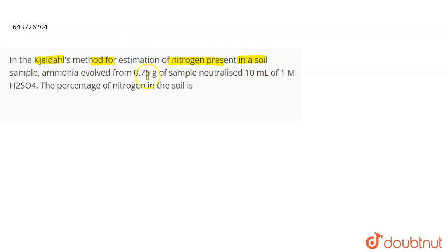Ammonia evolved from 0.7 grams of sample neutralized 10 ml of 1 molar H2SO4. The percentage of nitrogen in the soil is? Okay, so the volume of H2SO4 that is given to you is 10 ml, the molarity of H2SO4 given to you is 1 molar.